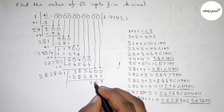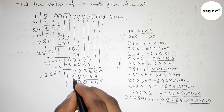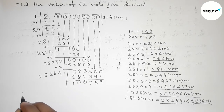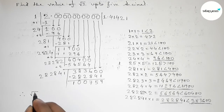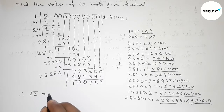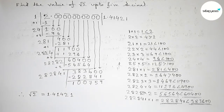Subtract to get the remainder. So that is the complete process to find the value of root 2 up to 5 decimal places. The value of √2 up to 5 decimal places is 1.41421. Thanks for watching.